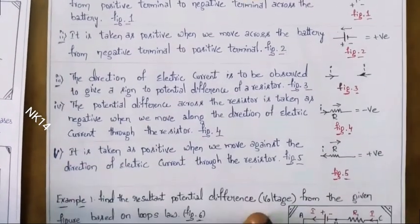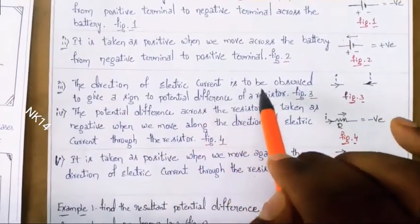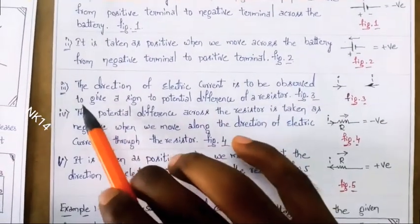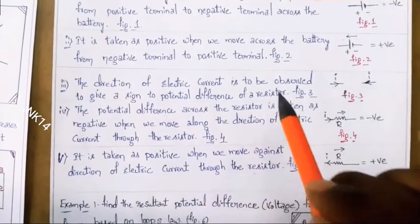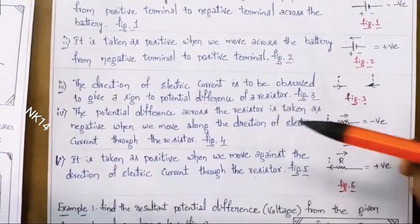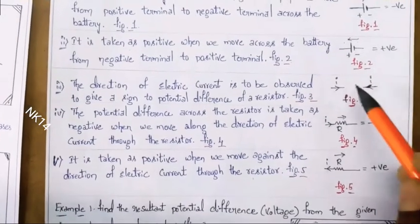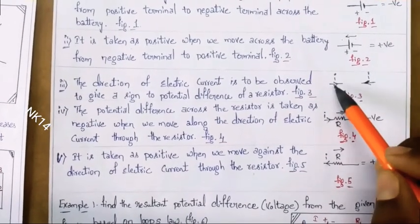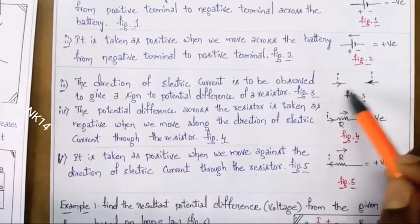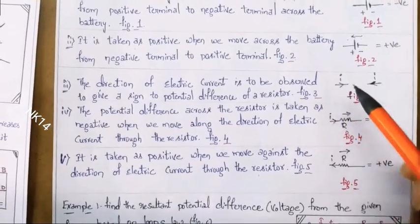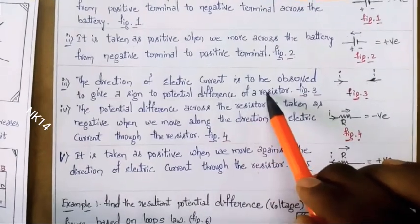The third point: the direction of the electric current is to be observed to give the sign to the potential difference of the resistor. If any resistor is there, we have to see the direction of the current — it may be from right to left or left to right. Based on the direction of the current, the voltage difference across the resistor can be given.